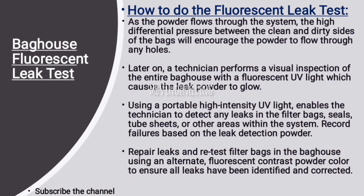After the injection of the fluorescent powder, as the powder flows through the system, the high differential pressure between the clean and dirty sides of the bags will encourage the powder to flow through any holes. A technician then performs a visual inspection of the entire bag house with a fluorescent UV light, which causes the leak powder to glow. Using a portable high intensity UV light enables the technician to detect any leaks in the filter bags, seals, tube sheets, or other areas within the system. Record failures based on the leak detection powder.